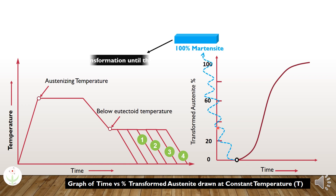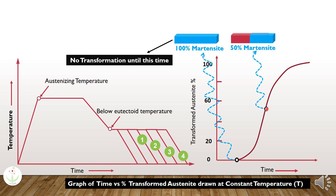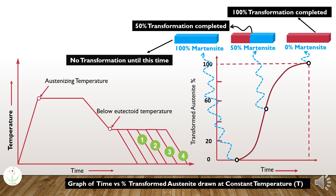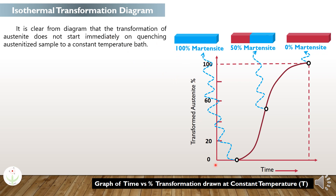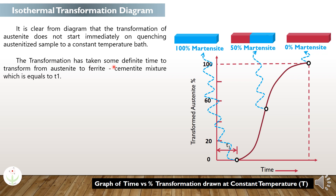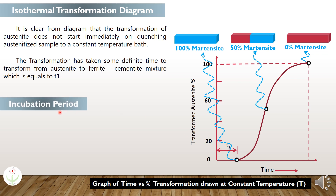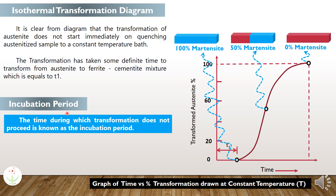Until a certain time duration, we observe 100% martensite in the quenched sample, which indicates that the transformation has not started yet. One point indicates that 50% of the transformation has been completed, because we observe 50% martensite in the quenched sample. Another point indicates that the transformation has been completed because no martensite is observed. One thing is clear from this diagram: the transformation of austenite does not start immediately upon quenching the austenite sample to a constant temperature bath. The transformation takes some definite time to proceed from austenite to the ferrite-cementite mixture, equal to T1 as indicated in this diagram. This time duration is known as the incubation period, defined as the time during which transformation does not proceed.